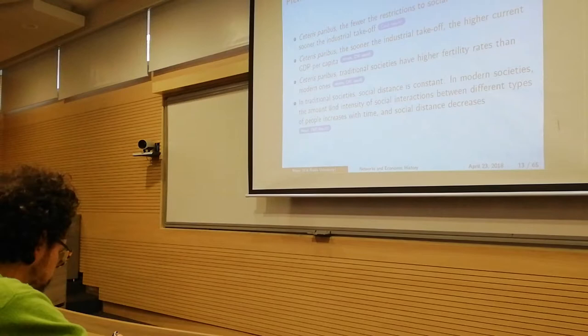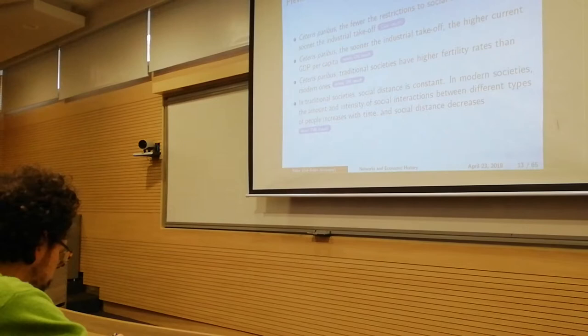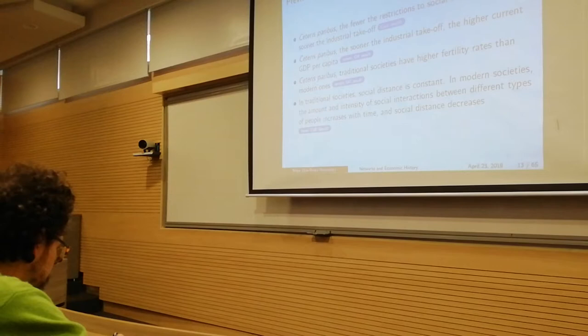Which is something that hasn't been done before in growth. Basically the model predicts that before the industrialization, the social interaction should have been really stable. Once it industrializes, the connectivity of the society should have increased, therefore the distance in society should have reduced.